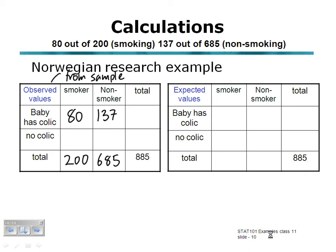Mothers who smoke and don't smoke as one variable, baby has colic or no colic as the other variable. To fill in the totals, the smoking mothers whose babies did not have colic: 200 take away 80 is 120. The non-smoking mothers whose babies do not have colic: 685 take away 137, which is 548.